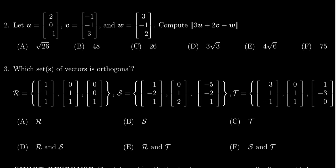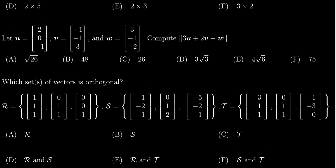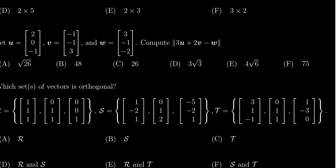We are asked to compute the norm of 3u plus 2v minus w. To begin with, we need to compute this linear combination 3u plus 2v minus w. I'm going to move this around to get a little bit more space on the screen.